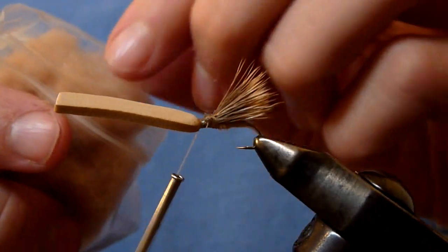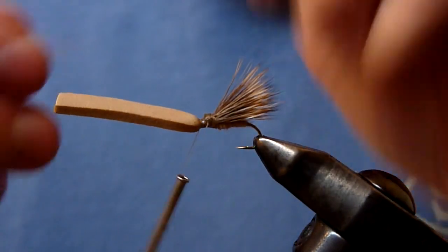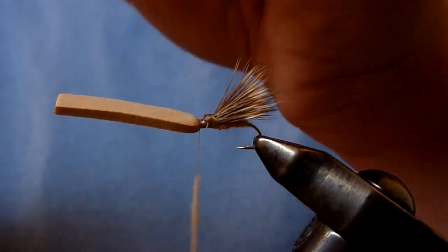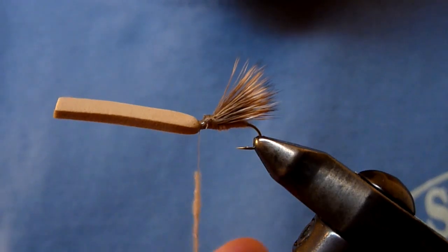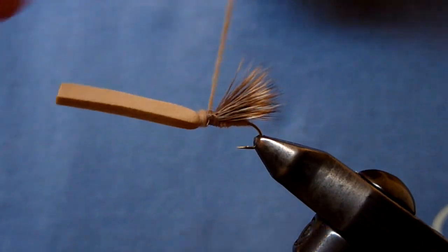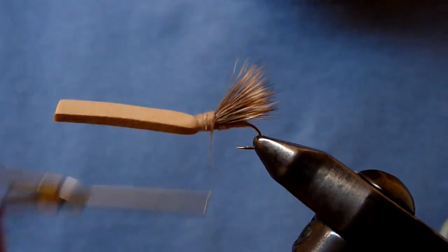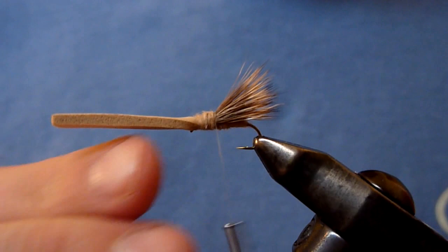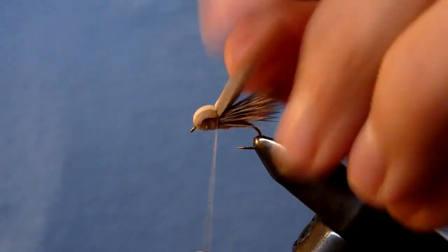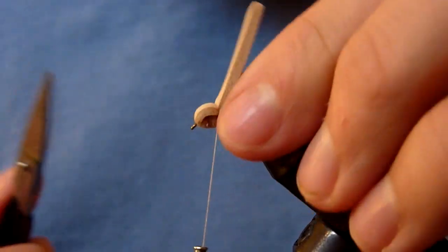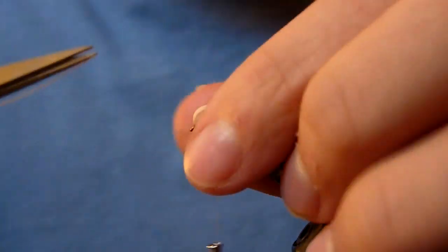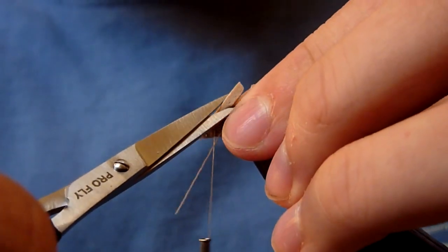Now we're going to take just a little bit more dubbing. Wrap it back to our tie-in point near the wing. We're going to fold that foam over. A couple wraps to secure. Now we're going to clip it to a point. Just like so.